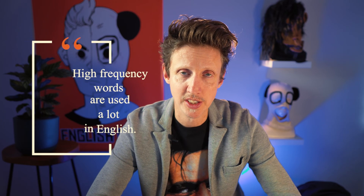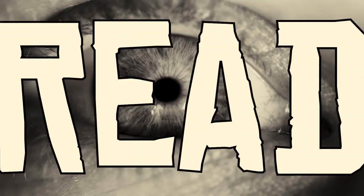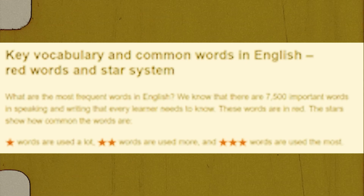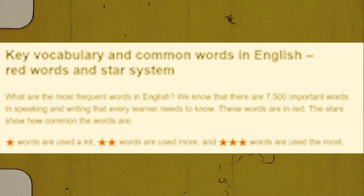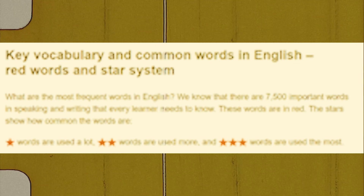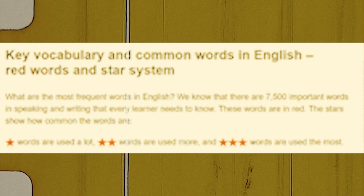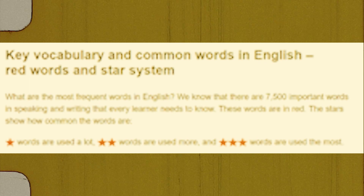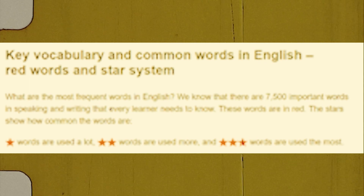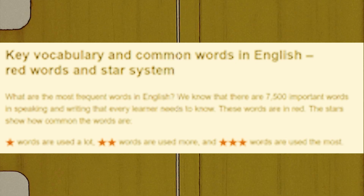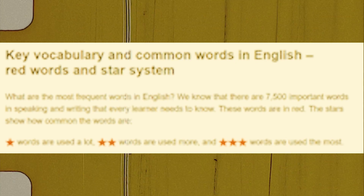High frequency words are words that are used a lot in English. This means you're more likely to hear or read these words in general English. So if you find one of these words and you don't understand it, then it definitely goes into your vocabulary recording system. Most online dictionaries will show you the frequency of a word. Macmillan does it through a star system: three stars are the most common — the top 2,500 words in English; two stars are up to 5,000; one star covers between 5,000 and 7,500 words, and anything outside of that is less common.